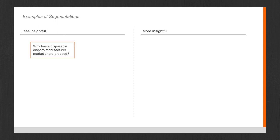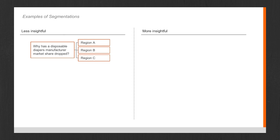The first example: why has a disposable diapers manufacturer's market share dropped? A typical approach is to segment by region A, region B, and region C — or by continents or major countries if it's a global manufacturer. This is not very insightful for two reasons. First, there's no clue that the drop is worse in one region than another. Second, even if it has dropped more in region A, you still get no insight into why that might be.